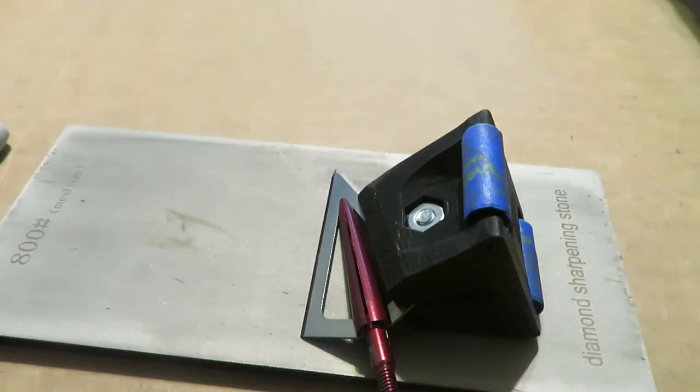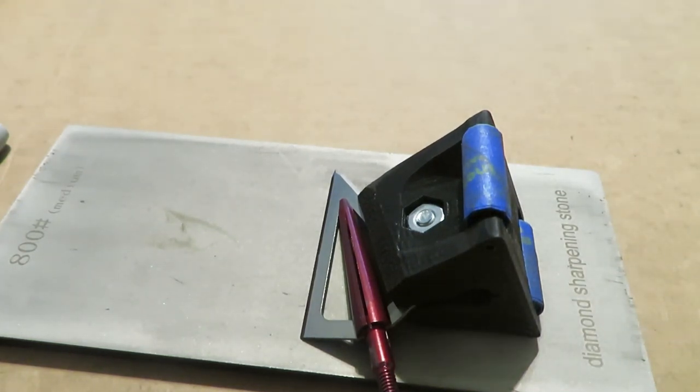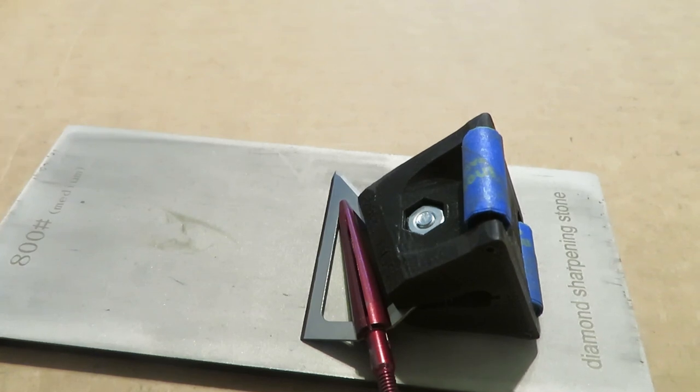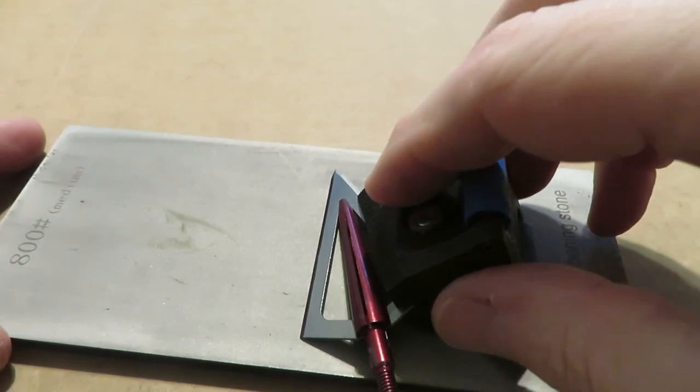Pushing down hard creates a lot of flex and rounds off your edge. You don't need to push down hard. It wrecks the diamond plates, wrecks the sandpaper, whatever you're using the sharpener. It flexes the blade, so tons of reasons not to push down hard. The weight of your hand is enough.